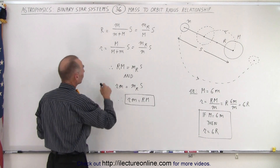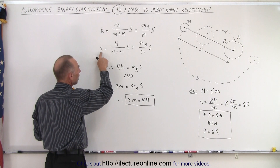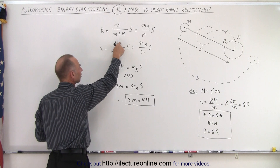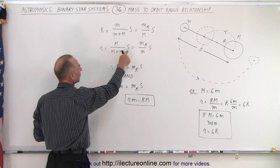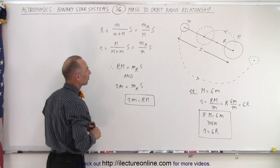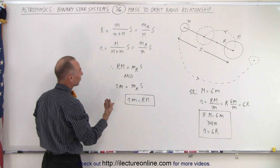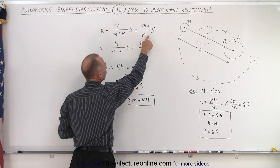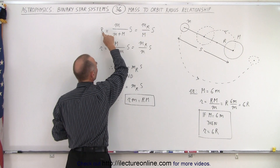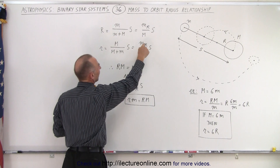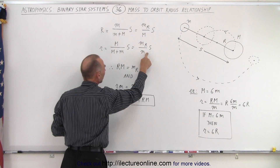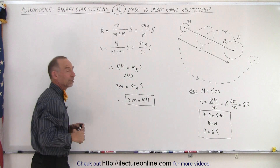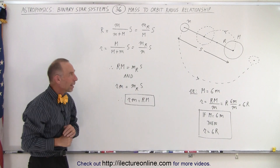Likewise, the radius of the small object is equal to the ratio of the large mass divided by the total mass, multiplied times the total distance s. This then becomes the reduced mass divided by the large mass for the radius of the large object, and the reduced mass divided by the small mass multiplied times the total distance for the radius of the small object.